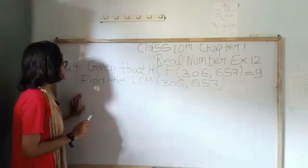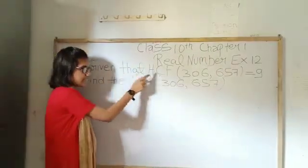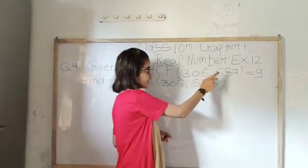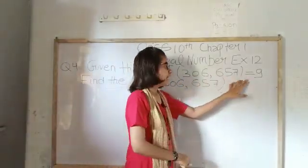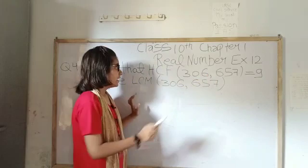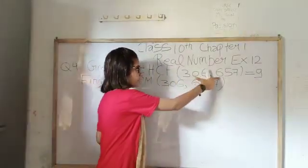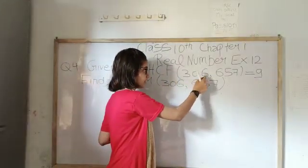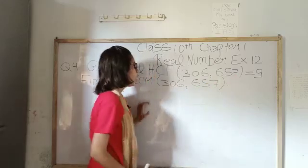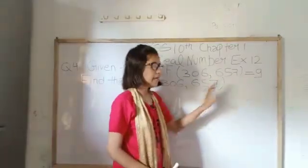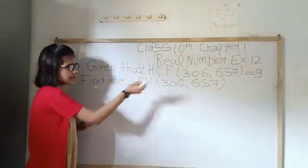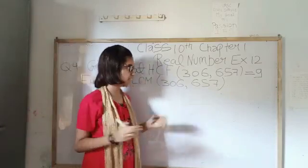So what is our question number fourth? Given that HCF of these two numbers, 306 and 657, equals to 9. That means two numbers are given, 306 and 657, whose HCF is given as 9, but the LCM of same numbers is not given. When such a situation is there, so what we do?